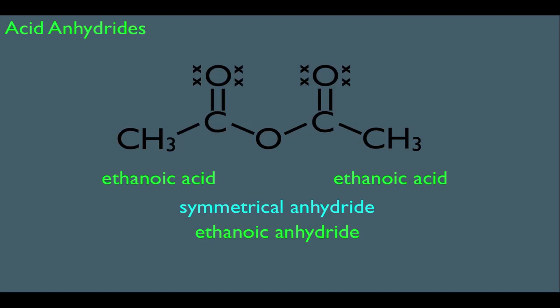You could even name anhydrides using the common name system. The common name for ethanoic acid would be acetic acid, so the common name for this symmetrical anhydride would be acetic anhydride.